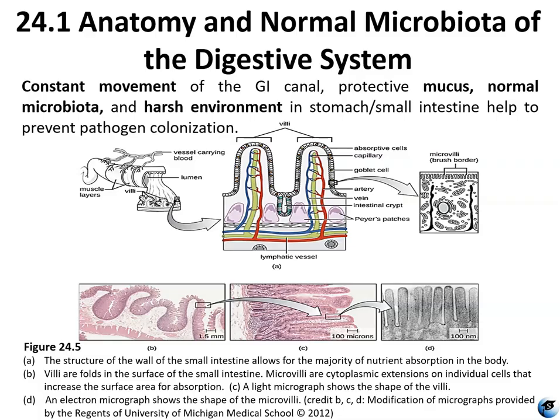The gastrointestinal canal is characterized by constant movement, and there is mucus that protects the GI tract. You also have your normal microbiota that live in the gut and the colon. It is also a pretty harsh environment, especially in the stomach, where hydrochloric acid production makes the pH really low. All of these things help to prevent colonization by pathogens. Figure 24.5 shows the structure of the small intestinal wall with the villi and microvilli, which increase the surface area of the small intestine and aid in absorption of nutrients and water.